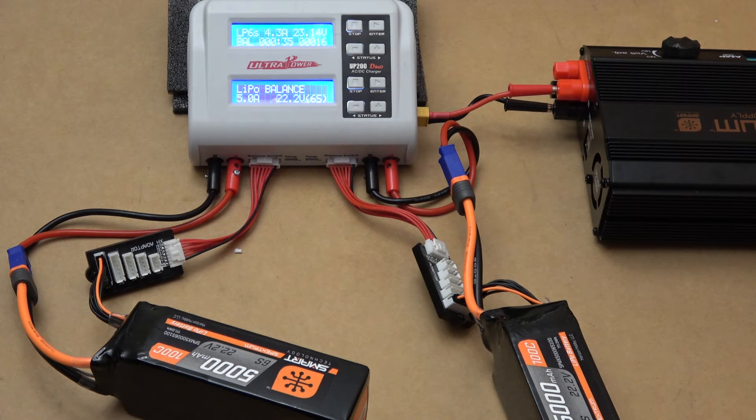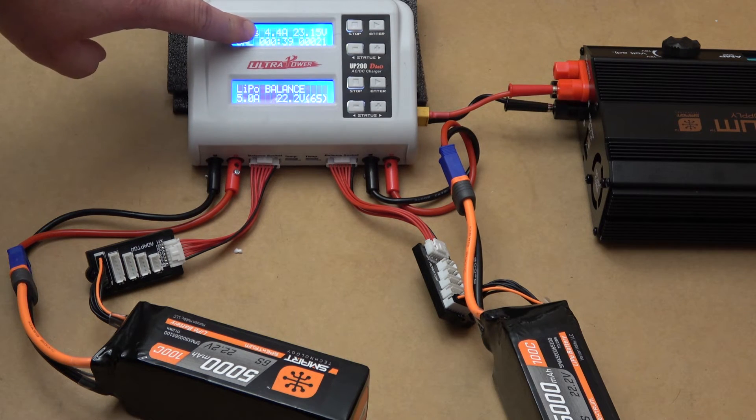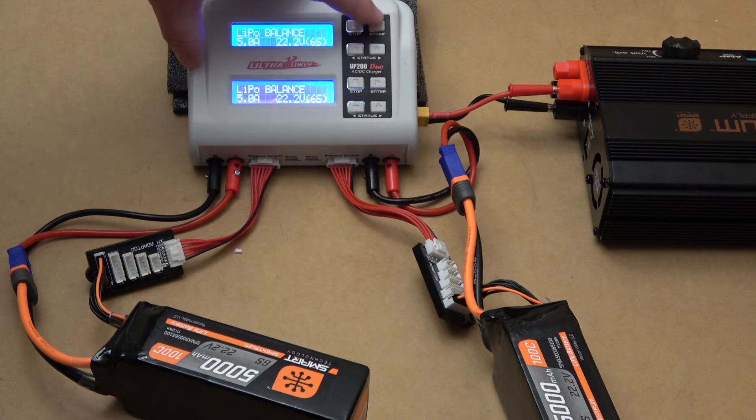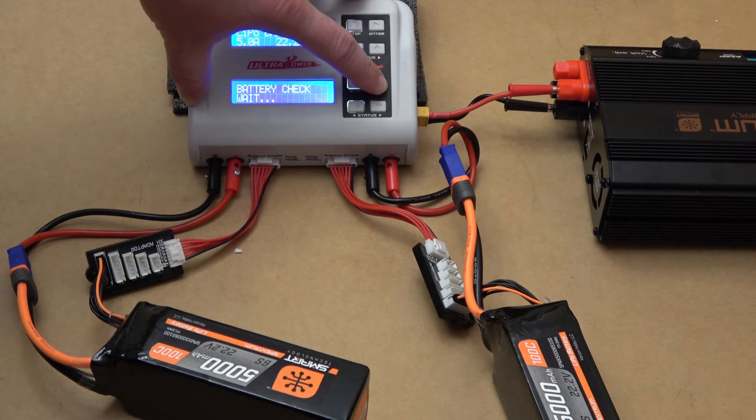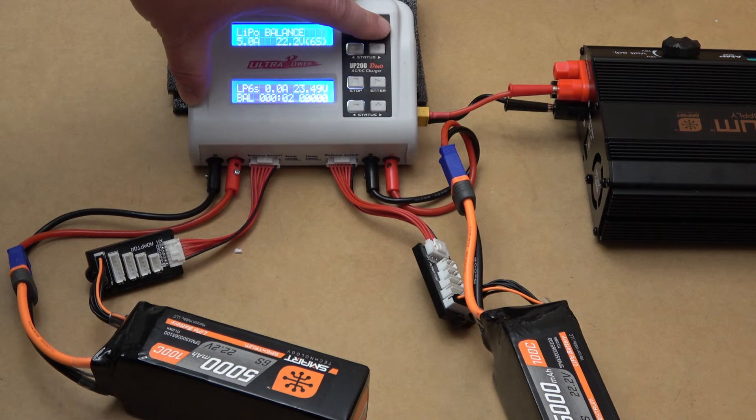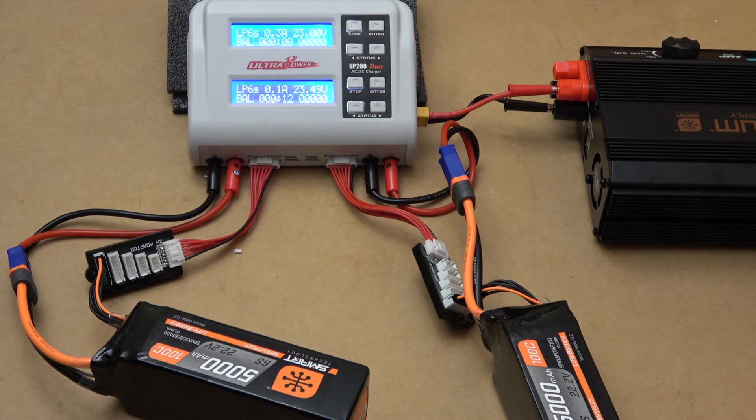Now we've stabilized at 4.2 to 4.3 amps. We're going to stop it and start them both up, and we can see the difference between the wall outlet power and the power inverter. It's definitely running more juice to it - it's getting a little warm, so I'll kick the fan on.